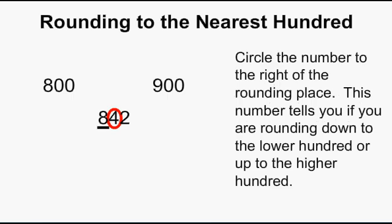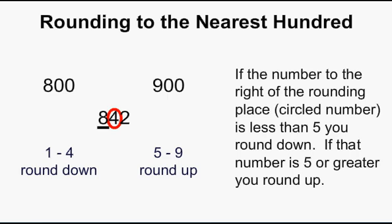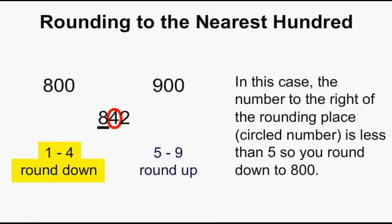Circle the number to the right of the rounding place. This number tells you if you are rounding down to the lower hundred or up to the higher hundred. If the circled number is less than 5, you round down. If that number is 5 or greater, you round up. In this case, the circled number is less than 5, so you round down to 800.